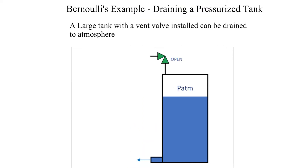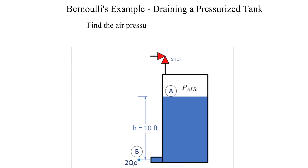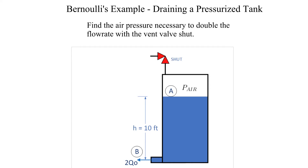We have a large tank that has a vent valve installed. When the vent is open, the volume above the water is at atmospheric pressure. The vent can be shut and pressurized with air. In this example, we determine the velocity with the vent open and what air pressure is necessary to double that flow. The water level in the tank is 10 feet for all of our analysis. Then we shut the vent valve and pressurize the volume above the water surface to double the flow rate.